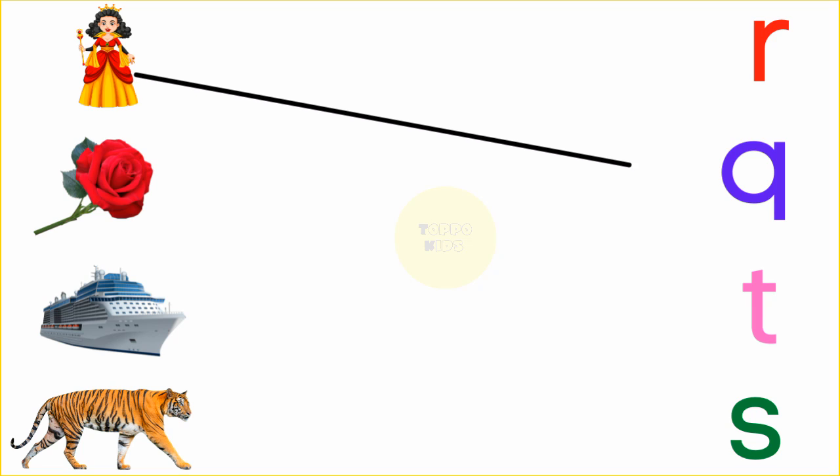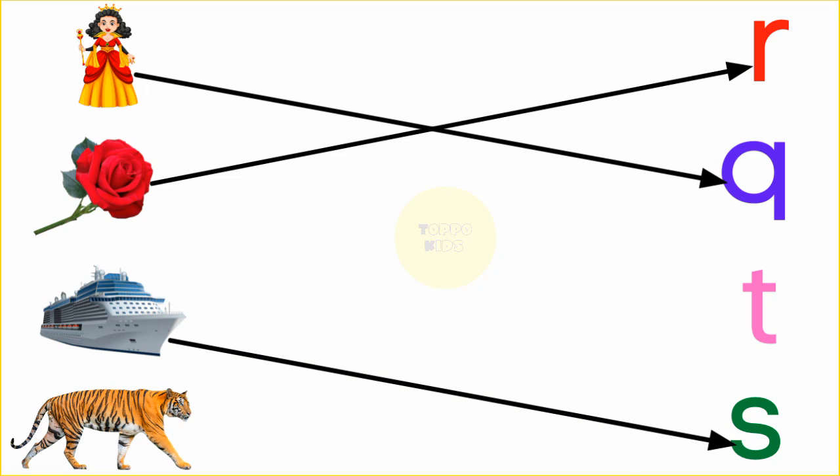Q. Q for queen. R. R for rose. S. S for ship. T. T for tiger.